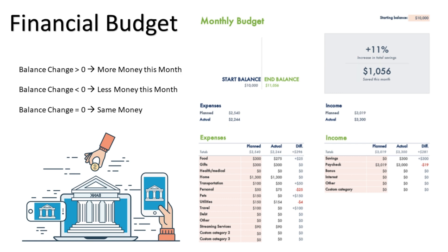Using the total deposit minus the total withdrawal amount, we will find the change during this time. If the change is positive, we will have more money for the balance. If the change is negative, we will have less for the balance. If the change is zero, then the balance will remain the same. This is a financial budget that we are dealing with in our daily lives.